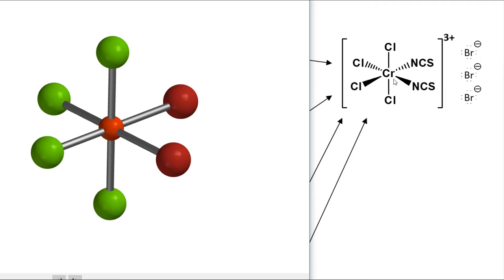I want to fess up to a mistake: if this complex is 3+ and all six ligands are negatives, that makes chromium a 9+, which is really not plausible. If you were confused about how this could be a 9+, good for you — that was clearly a typo. I was sleep deprived. I apologize, but it will not affect the problem. The main thing is four chloros (green) and two isothiocyanatos (red).